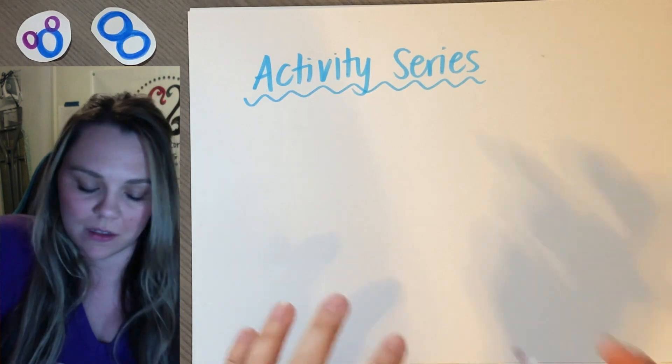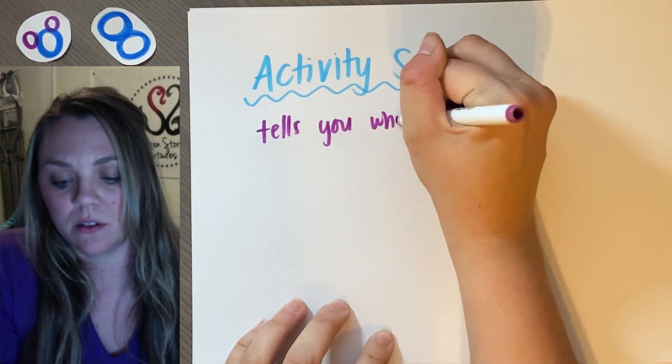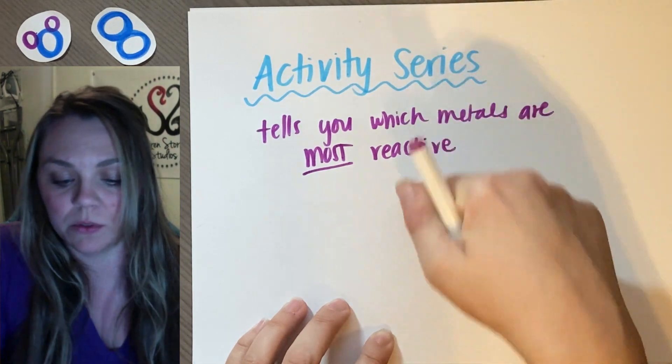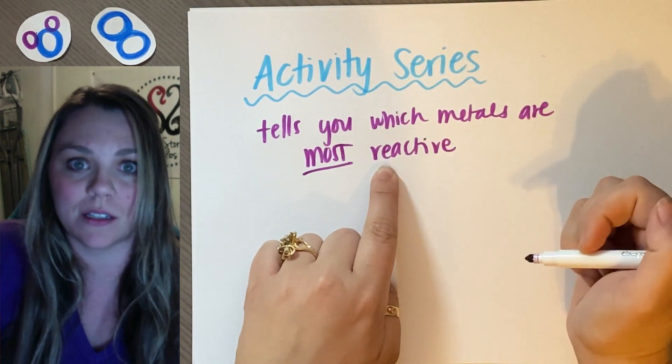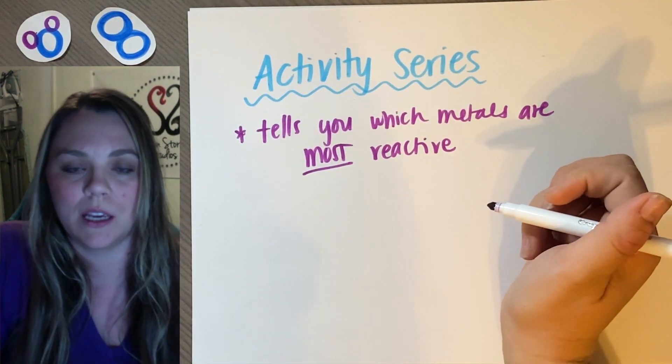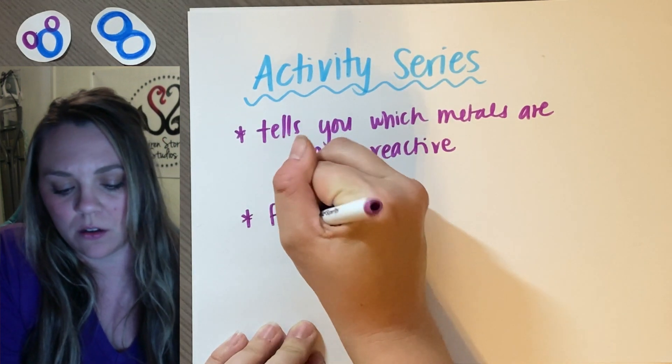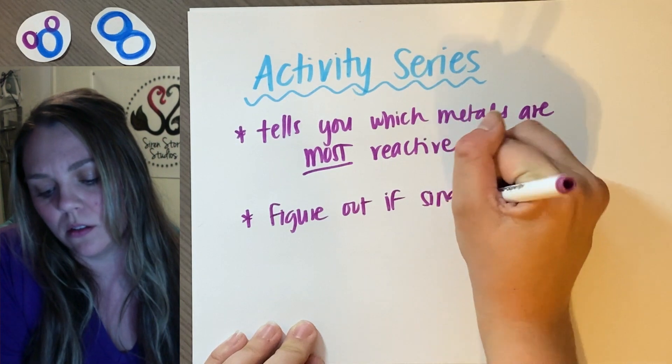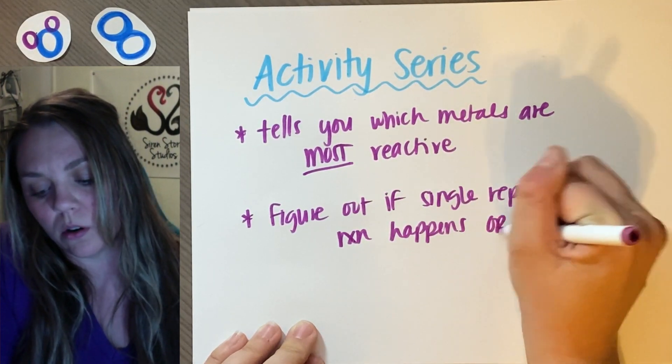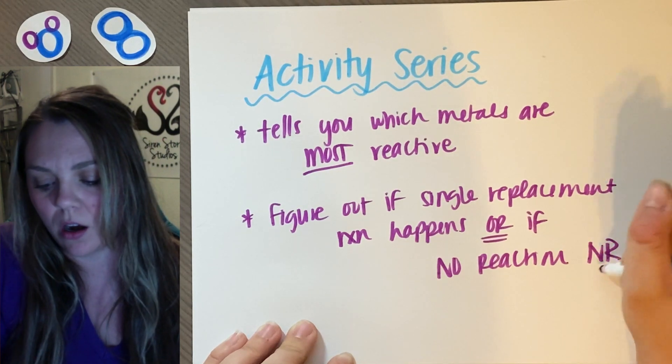So what an Activity Series is, is basically it just tells you which metals are most reactive. Or which ones are the most active, which is the Activity Series. So why do we care? Because basically if you follow the Activity Series, then you're going to figure out if a single replacement reaction is actually going to happen or if no reaction is going to happen. So you can figure out if a single replacement reaction happens or if there's no reaction. And for no reaction, we put NR.